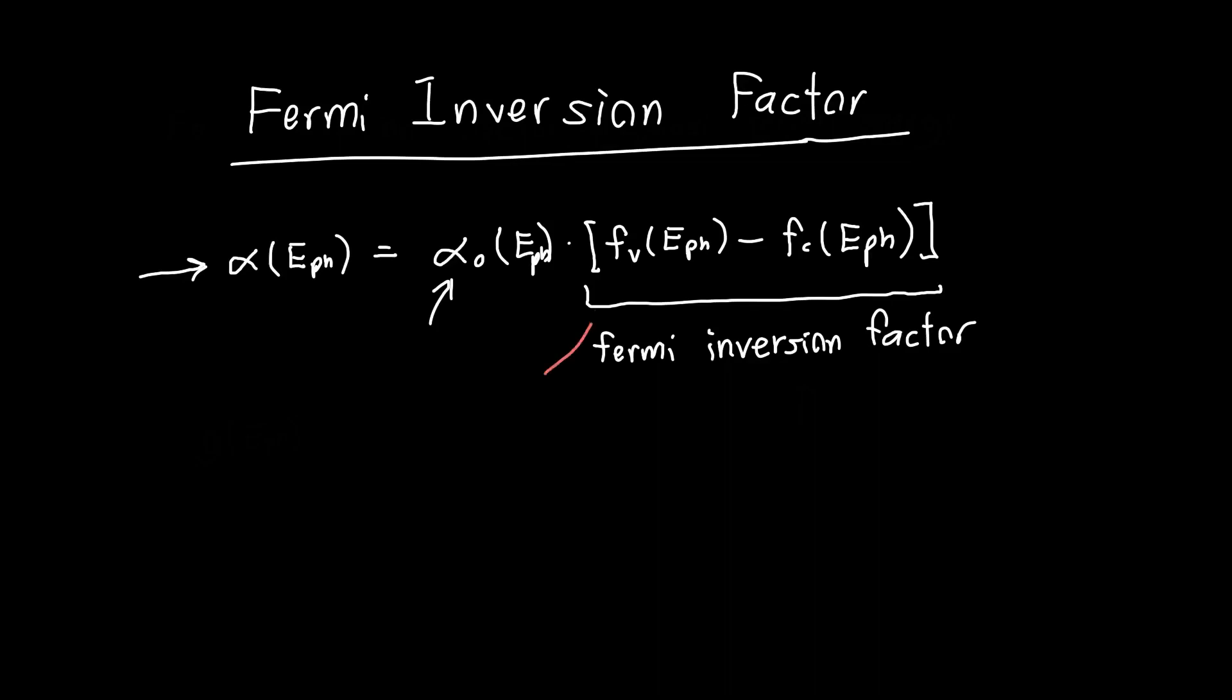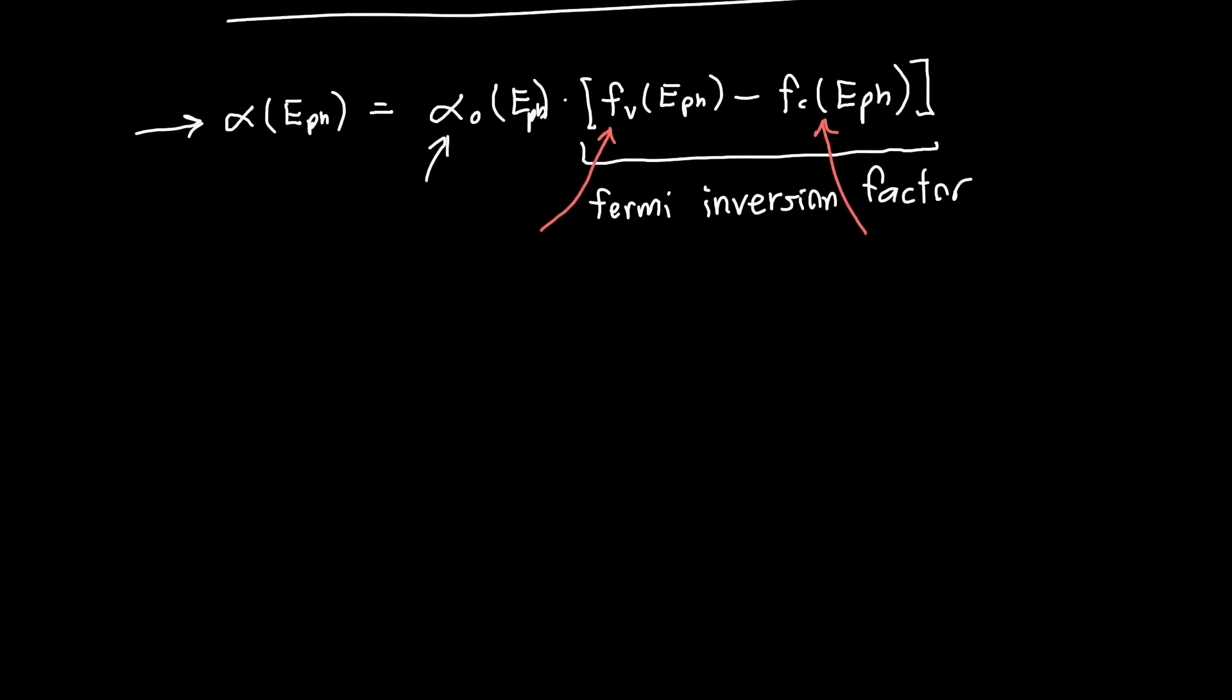Now we have to figure out how exactly these Fermi factors depend on the photon energy. Because in the last video, we said we've got our conduction band, we've got our valence band, there's some band gap in between, and the energies that our Fermi factors were evaluated for are E2 and E1.